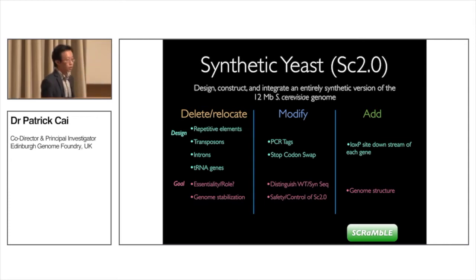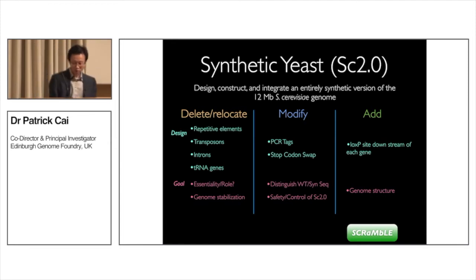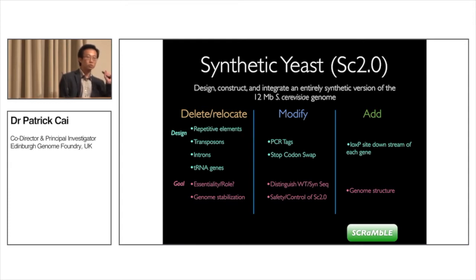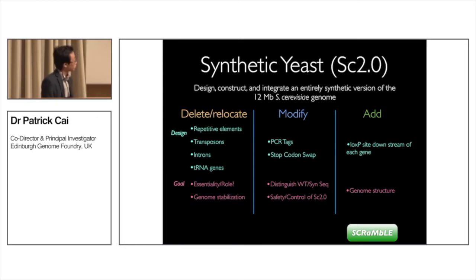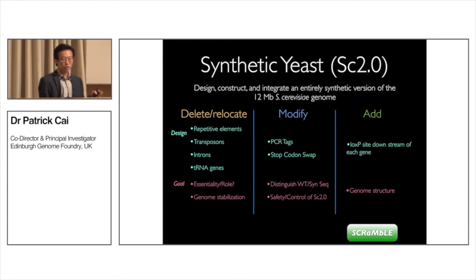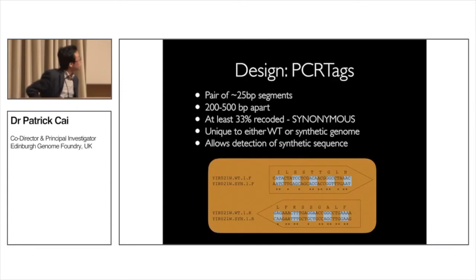We introduce a lot of PCR tags in the coding region — these are silent mutations in the genome. When the design software sees a tRNA codon in the genome, it changes it to TAA. At the end of the day we have a tRNA-free genome. We can then bring in the 21st amino acid by engineering the tRNA synthases. We also put loxP sites downstream of every 3' UTR — roughly 6,000 loxP sites across the entire genome.